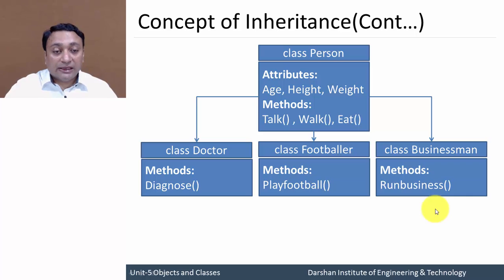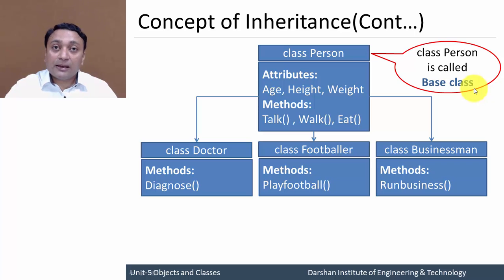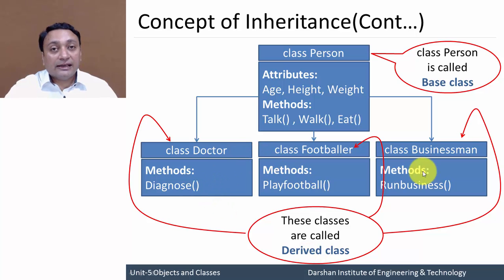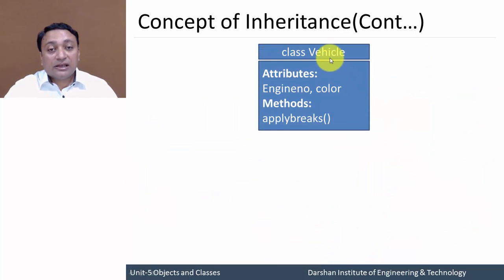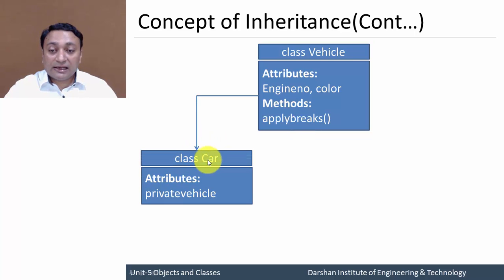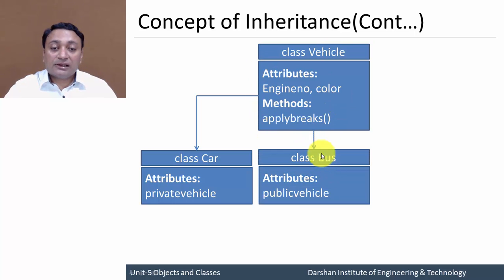This is the concept of inheritance, in which one class acquires properties from another class. The class whose properties are inherited is called the base class or parent class, and the classes that inherit are called derived classes or child classes. For another example, consider class Vehicle having attributes like engine number and color, and a method for applying brakes — properties that every vehicle will have.